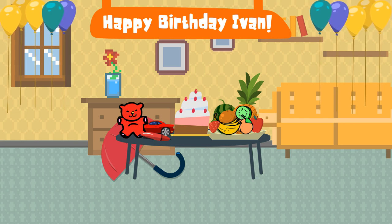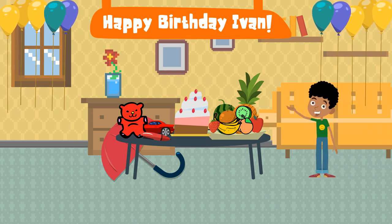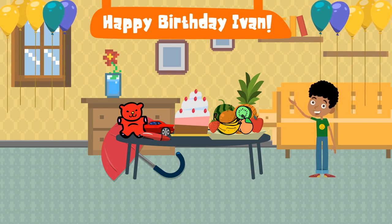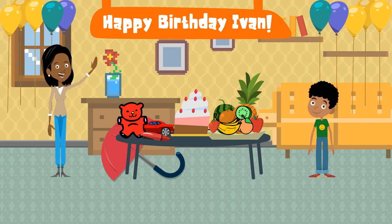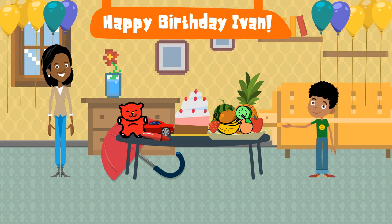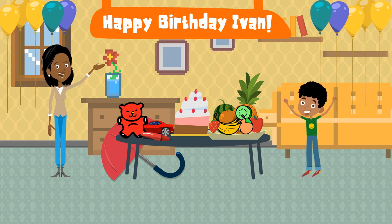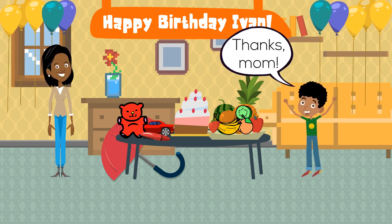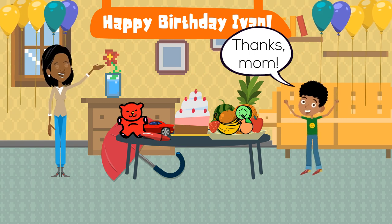To see how this works, let's take a look at our friend Ivan's birthday. Ivan's mom bought him a lot of red colored gifts and some fruits as birthday presents, knowing that his favorite color is red and that he loves fruits.